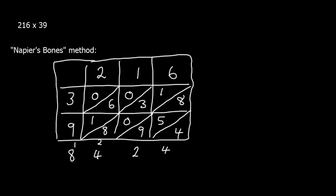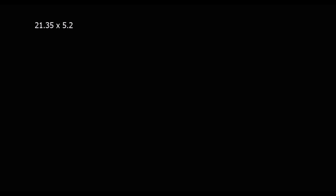So that's three different methods — you can pick the one that suits you best. Now we're going to multiply decimals. It's going to be the same process as multiplying ordinary integer numbers, but we're going to have to change the question. So I'm going to get rid of the decimals and change the question to 2,135 times 52: I've multiplied the first number by 10 twice, and the second by 10 once, so in total I've multiplied by 10 three times. I'll need to undo that at the end.